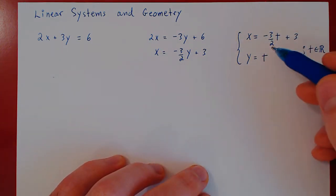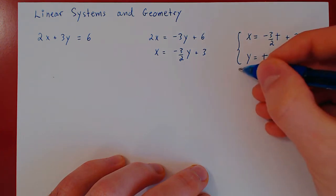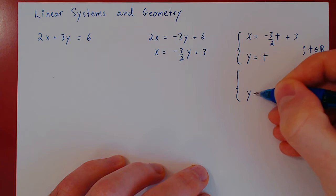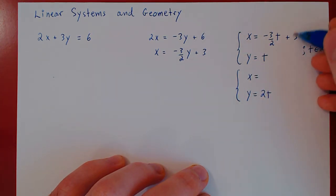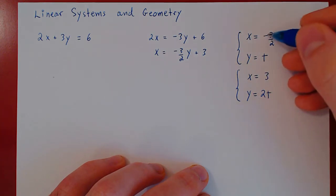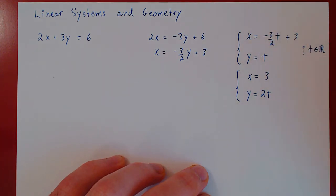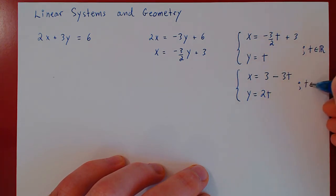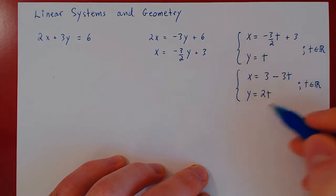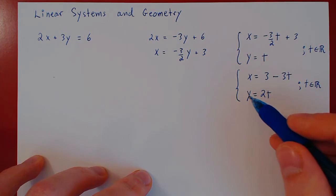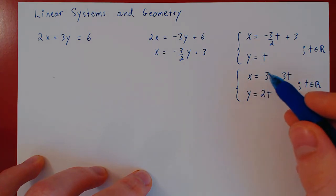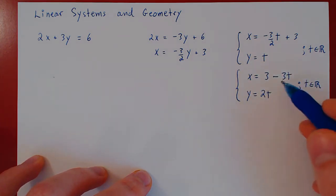We can do a little better. We can cancel the fraction if we replace t by 2t. So y equals 2t, and x becomes 3 minus 3t, where t ranges over all real numbers. This is our solution set: for any value of t, replacing y by 2t and x by 3 minus 3t gives a solution to this equation.